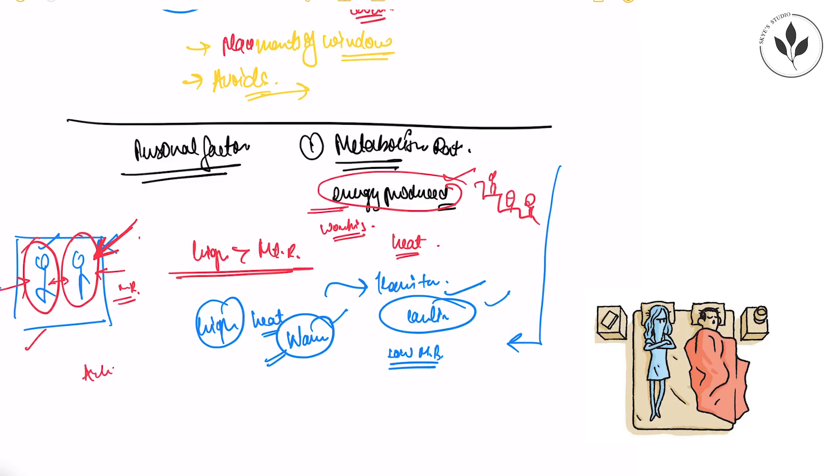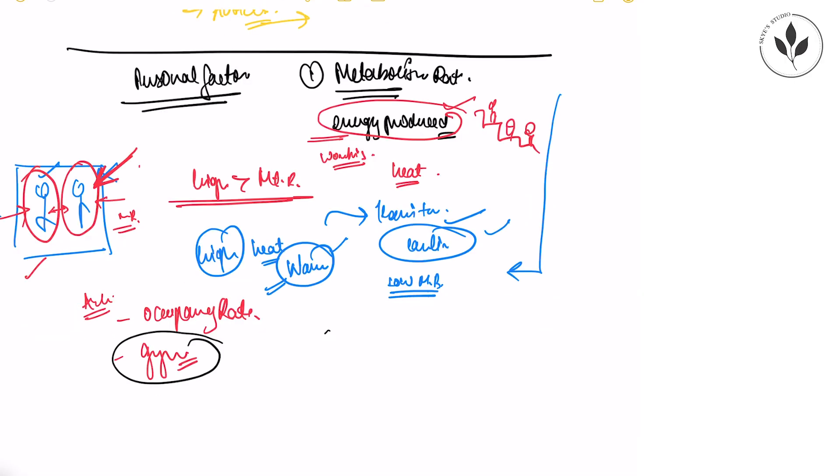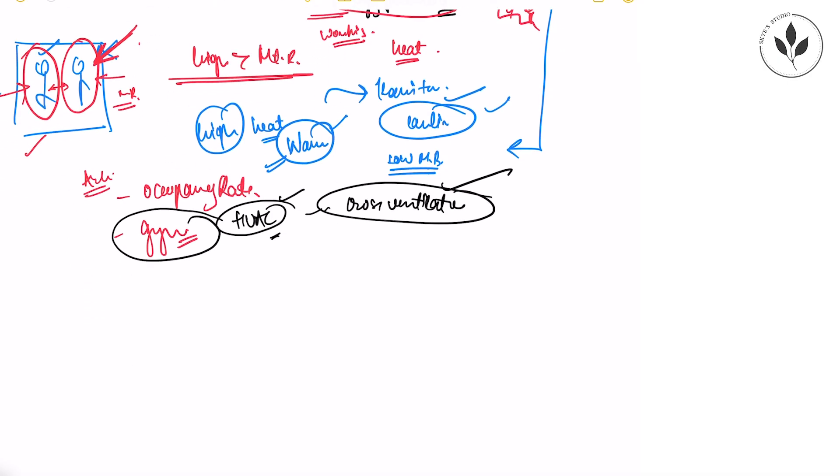So architecturally where it is helping, while designing according to occupancy rate. While designing gyms, we always have to take care of the HVAC installed in the areas. Because there will be more heat inside a gym as compared to a normal commercial or residential place. That is why the setting of AC or the cross ventilation in this area is more important than the others. So that there is proper thermal comfort inside the building.